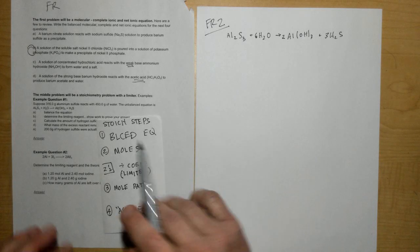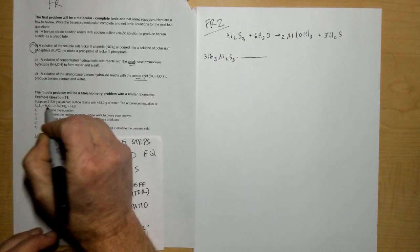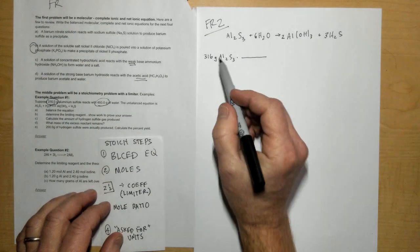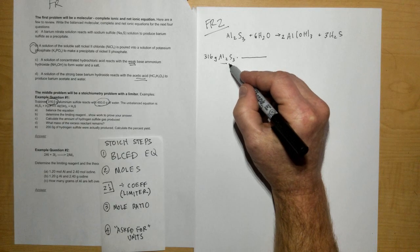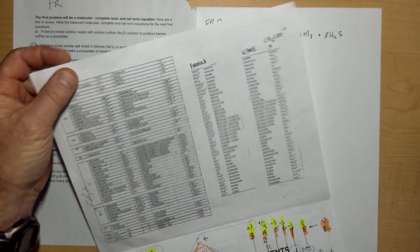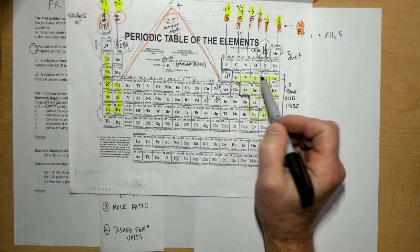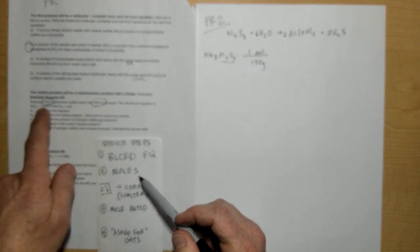Okay, step number two is to go to moles. We have 316 grams of aluminum sulfide with four sig figs, so we're going to try to stick with four sig figs throughout. When I add up two aluminums and three sulfurs on the periodic table, I get 150 grams. Aluminum is 27 times 2, and sulfur is 32 times 3 to get 150. That's going to convert to moles for my amount of aluminum sulfide.